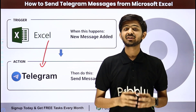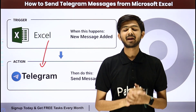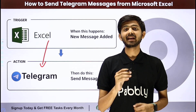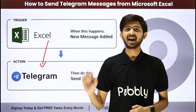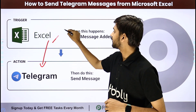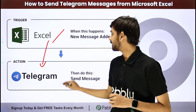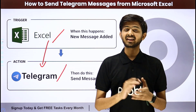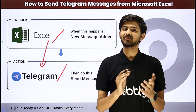For creating this connection, I'm going to use Pabbly Connect, which is an amazing software for automation and integration. In Pabbly Connect, I'm going to use Trigger and Action. In the trigger application, I'm going to use Microsoft Excel. In the action application, I'm going to use Telegram. Now let me take you to my computer screen.